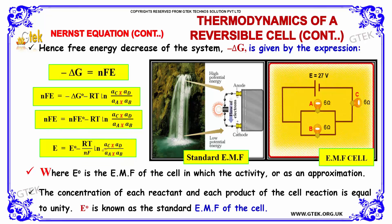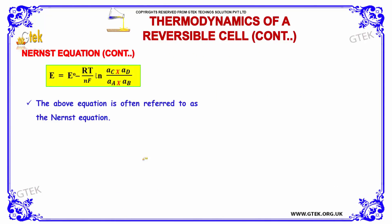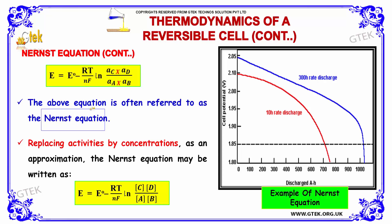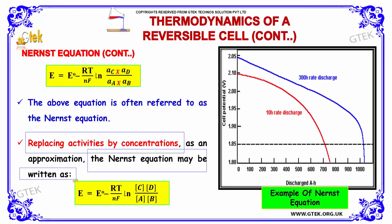Here, E° is the EMF of the cell when the concentration of each reactant and each product of the cell reaction is equal to unity — this is known as the standard EMF of the cell. The above equation is referred to as the Nernst equation. Replacing activities by concentrations as an approximation, the Nernst equation may be written as: E = E° − (RT / NF) ln [concentration terms].